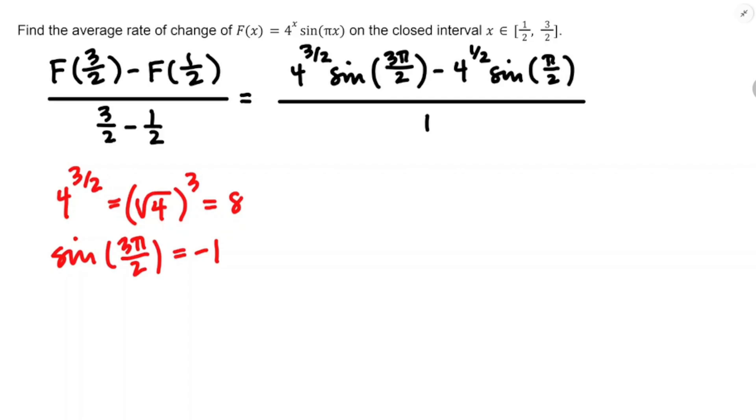And the second term, the four to the one half sine of pi over two. Four to the one half, that's the square root of four, and you know that's two. And then sine of pi over two, pi over two is at the top of the unit circle, and so that's going to be equal to one.